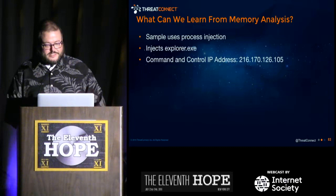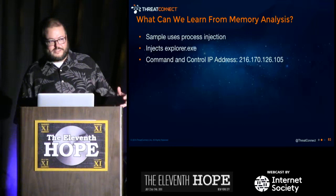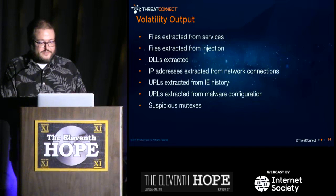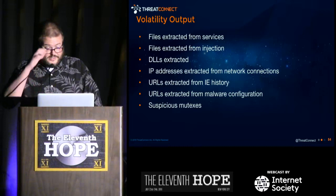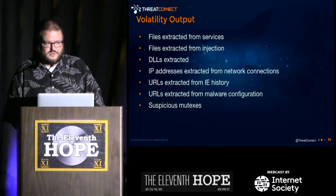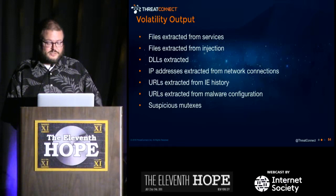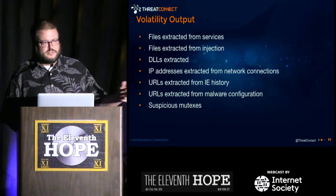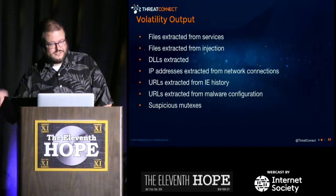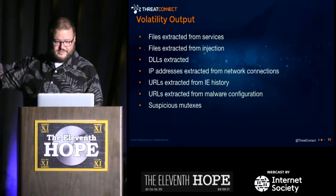What have we learned? The sample uses process injection, targets Explorer.exe, and we've pulled out a command and control IP address. Volatility's outputs include files from extracted services, injection artifacts, DLLs extracted, IP addresses, IE history — I can see the history of all URLs visited by the user or malware if they're using IE — URLs extracted from the malware configuration, and suspicious mutexes. There's so much more stuff you can get out of Volatility — I could give a 20-hour talk on it alone.